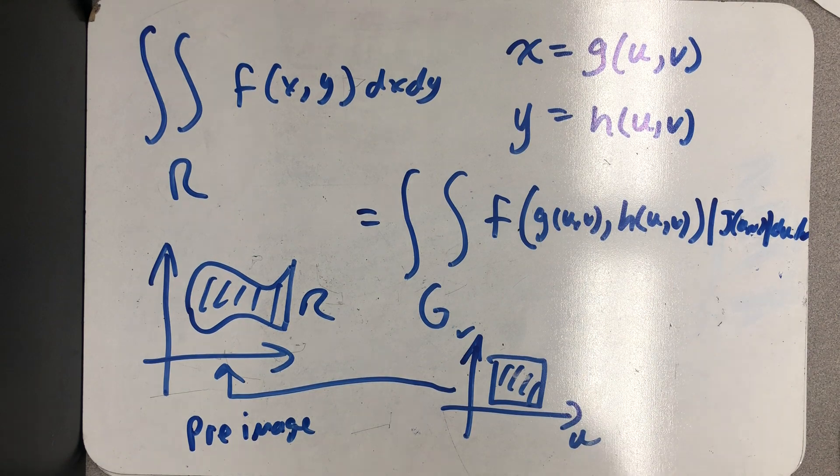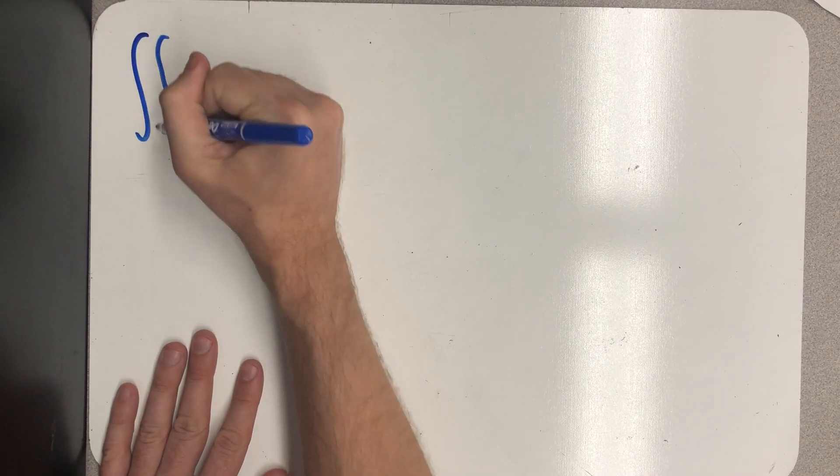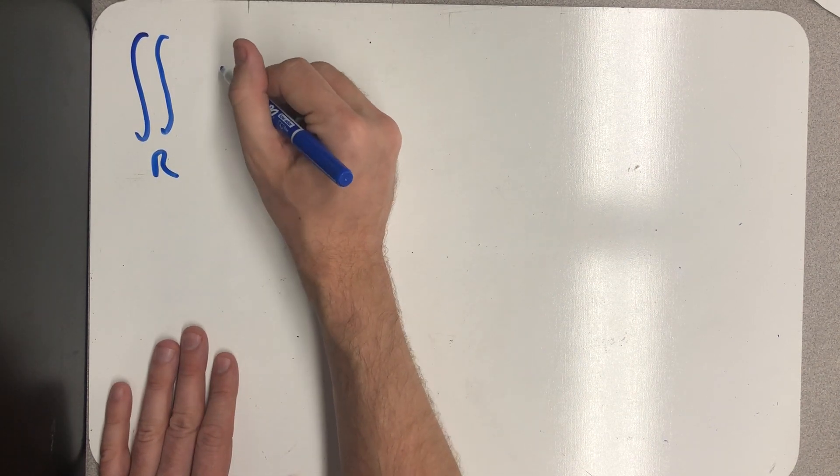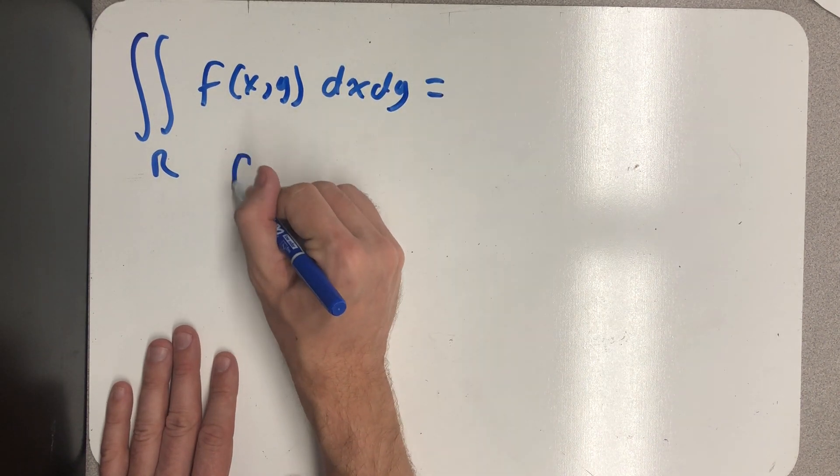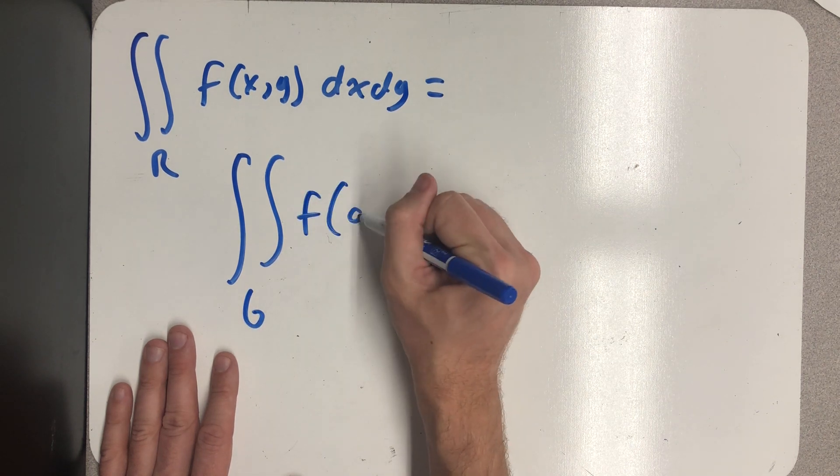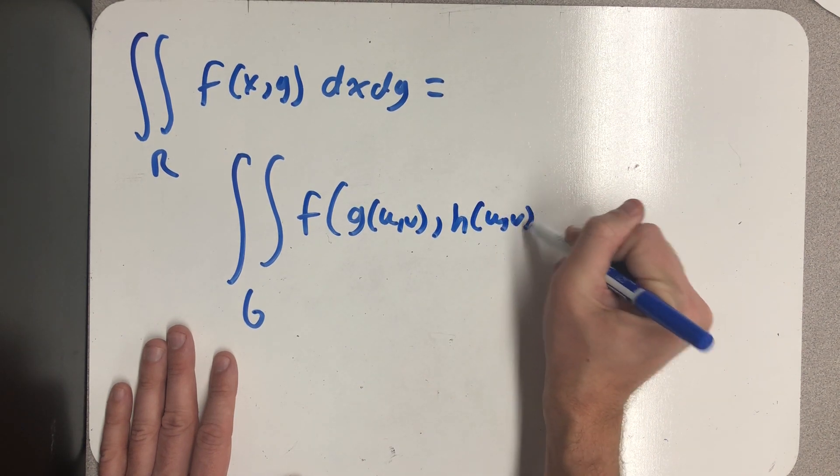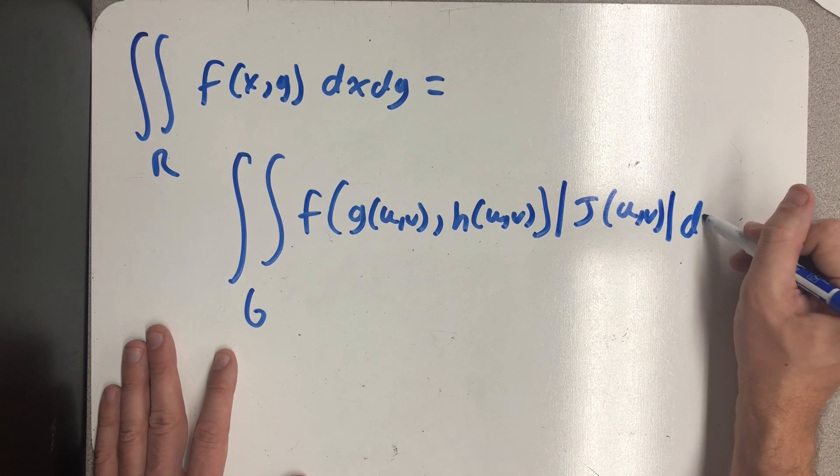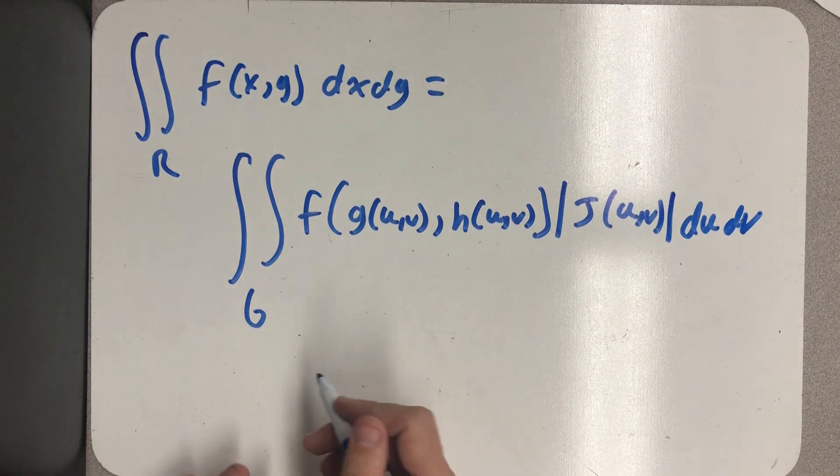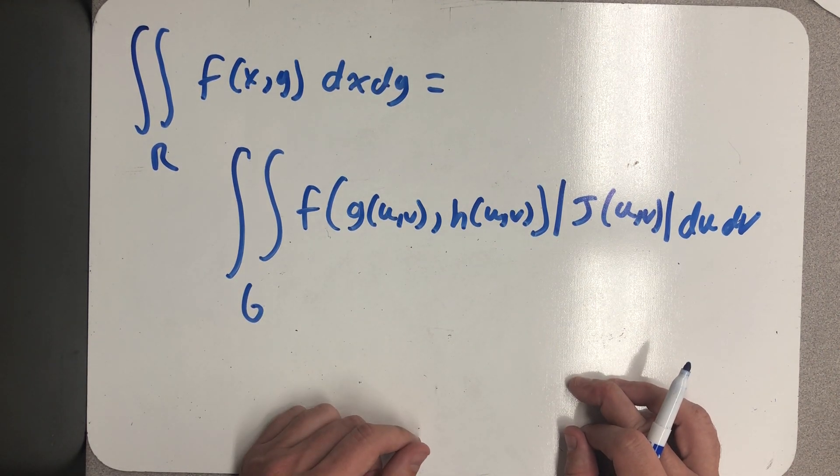Okay, so our substitution rule looks like this. The double integral over the region R is equal to the double integral over the region G of f of (g(u,v), h(u,v)) times the Jacobian in absolute value du dv, where our Jacobian is that determinant of partial derivatives. In our next video, we'll see an example.